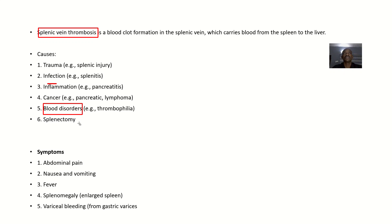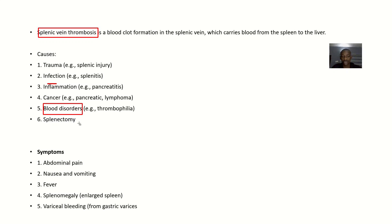Symptoms include abdominal pain, nausea and vomiting, fever, and an enlarged spleen. The spleen enlarges because with the thrombosis, blood is not being drained from the spleen as it should be, causing a backlog of blood in the spleen. There could also be sharp bleeding — not all symptoms must be present; these are possibilities of how this condition can present.